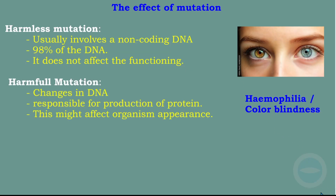Another effect of mutation is harmful mutation. In harmful mutation, the changes take place in DNA that is responsible for producing a protein, and this might affect the organism's appearance and functions. Examples of harmful mutation are hemophilia and color blindness.